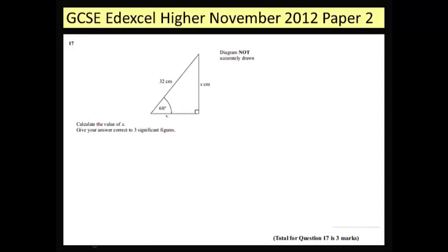Question 17. This is your basic trigonometry question where I'm given an angle and two sides and I need to work out one of the missing sides.